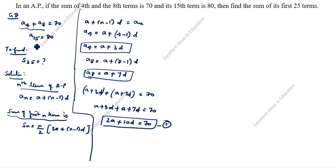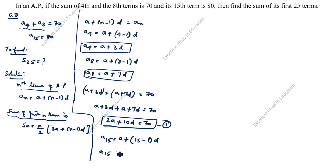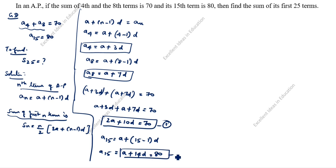For the second equation, A15 is equal to 80. So A15 equals A plus (15 minus 1) into D, which gives A plus 14D equals 80. This is the second equation.